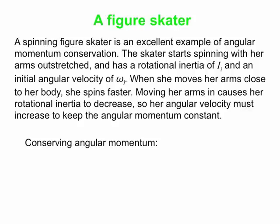So the angular momentum has to be conserved, and if rotational inertia changes, the angular velocity changes in the opposite way to keep angular momentum the same. We write the conservation equation: Li equals Lf, like Pi equals Pf for linear cases. Expanding: initial rotational inertia times initial angular velocity equals final rotational inertia times final angular velocity. For the figure skater, I-final is less than I-initial, so omega-final goes up to compensate. That's a great example of angular momentum conservation.